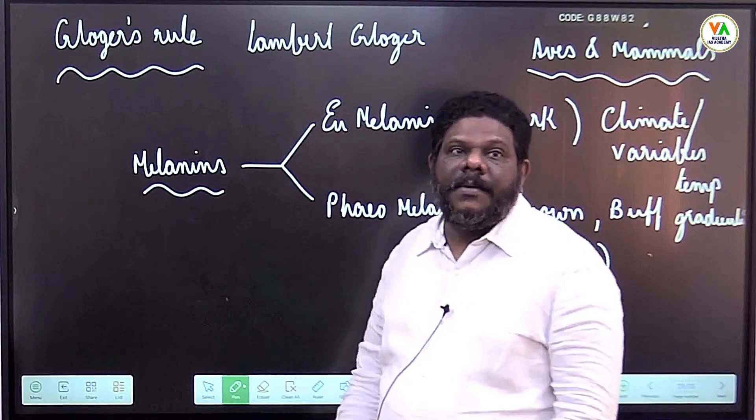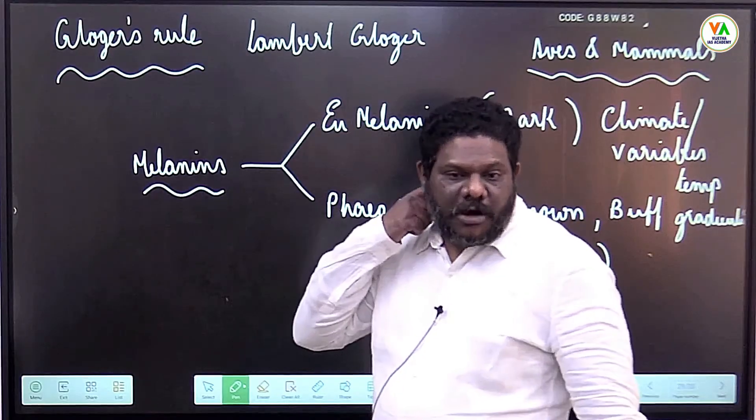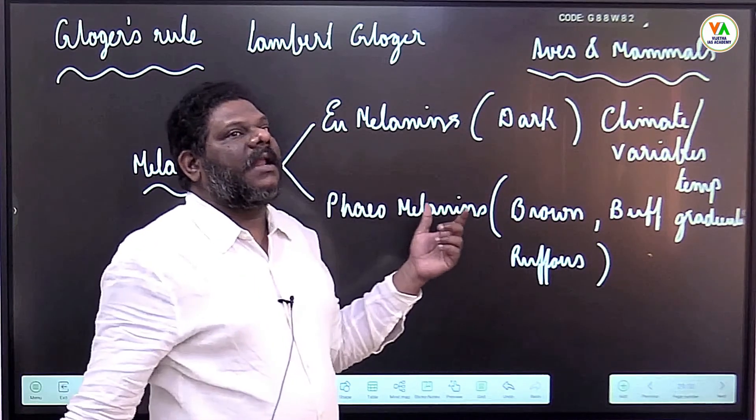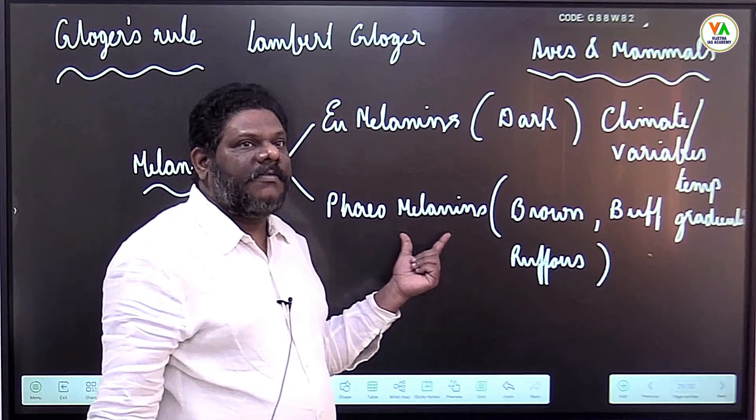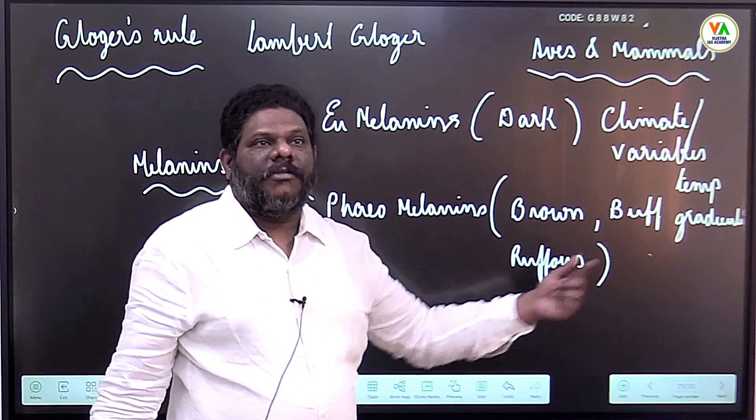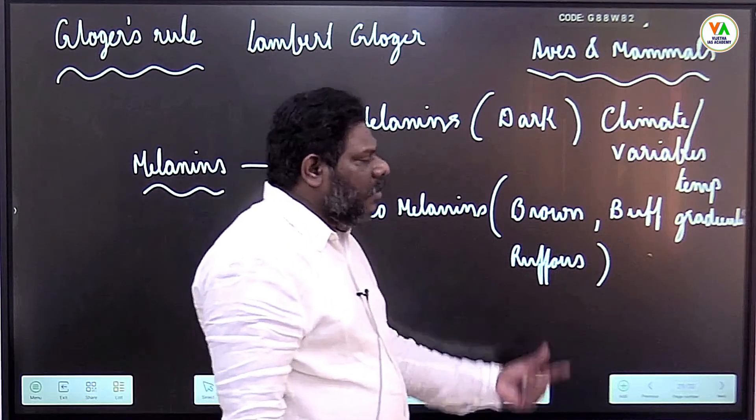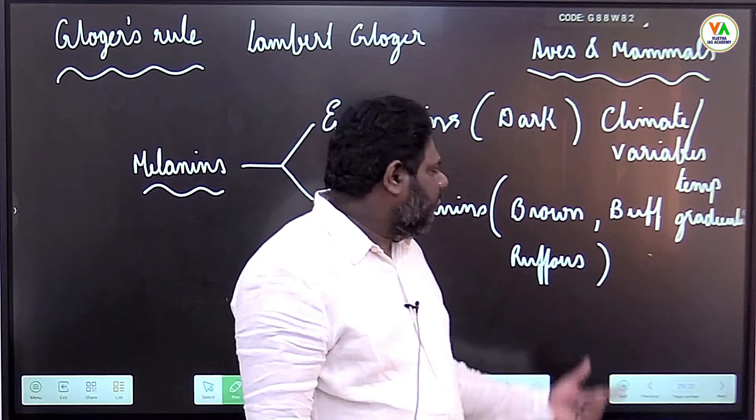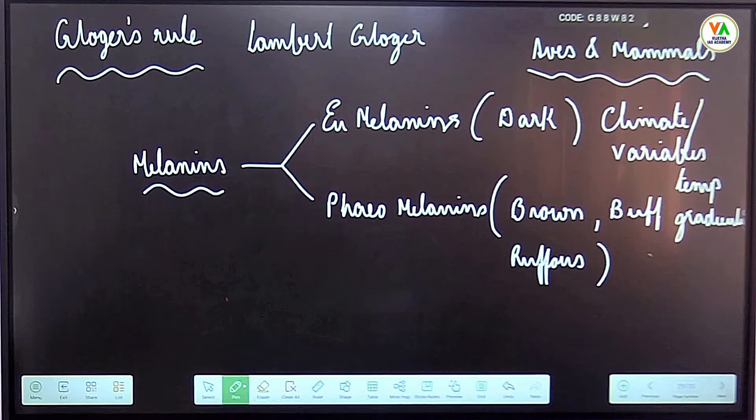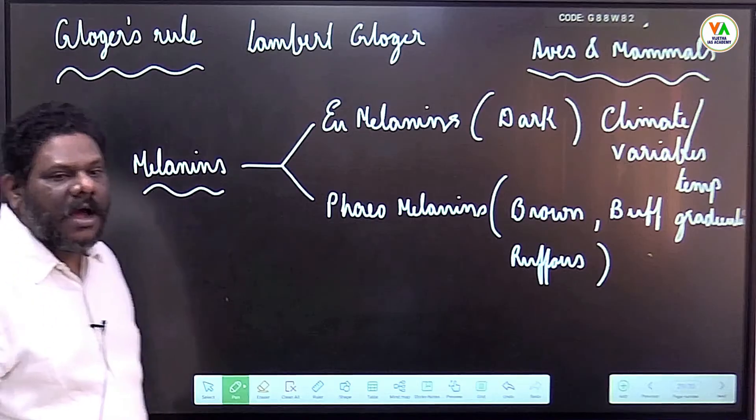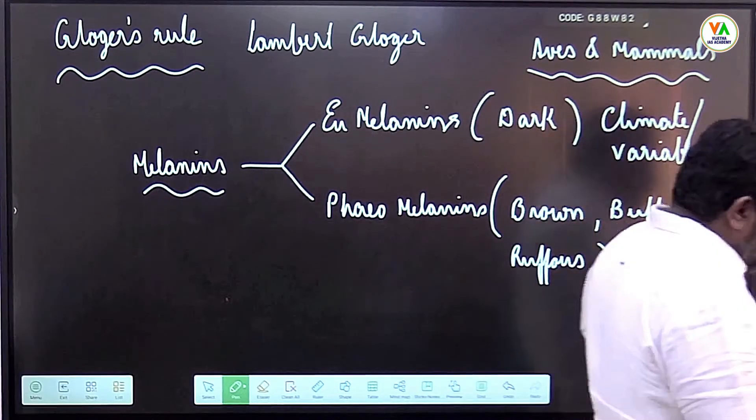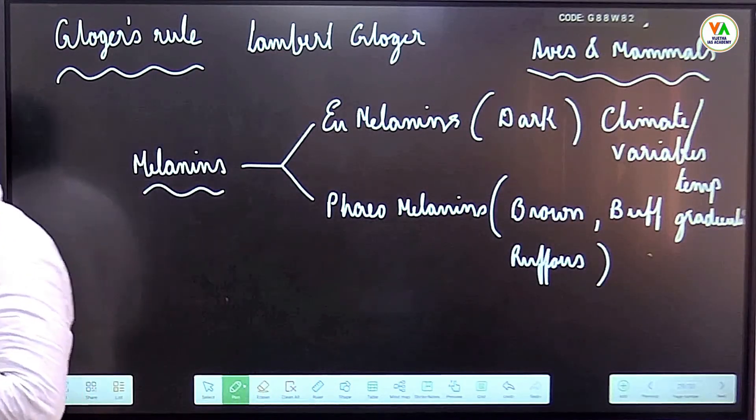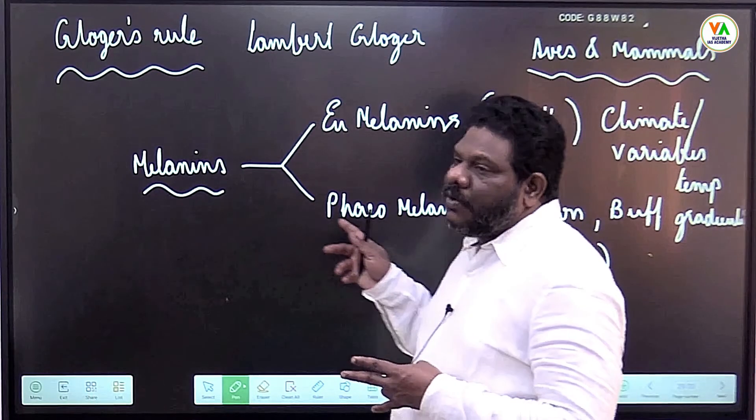According to him, melanins come in two forms: eumelanins which are responsible for dark coloration, and pheomelanins which are responsible for brown, buff (brownish red), and rufous (reddish brown). Animals living in hot climatic conditions tend to develop darker and more intense skin colors due to excess secretion of eumelanin.